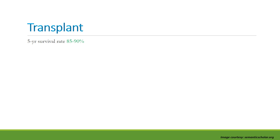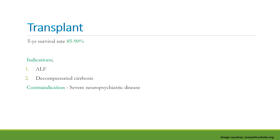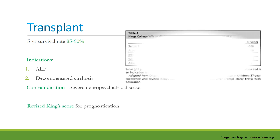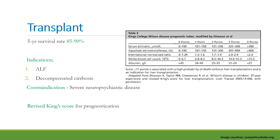The 5-year survival rate with transplantation is 85–90%. Indications include acute liver failure and decompensated cirrhosis, whereas severe neuropsychiatric disease is a contraindication. A revised King's score should be used for prognostication. An extracorporeal liver system, such as the Molecular Adsorbent Recirculating System (MARS), can be used as a bridge to transplantation in patients who develop acute liver failure in Wilson's disease.